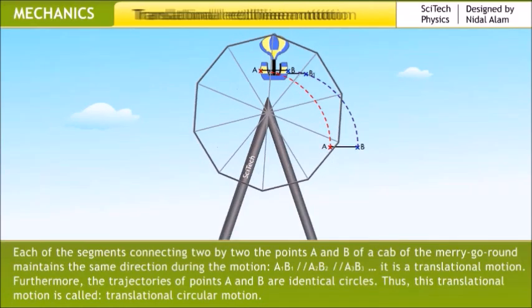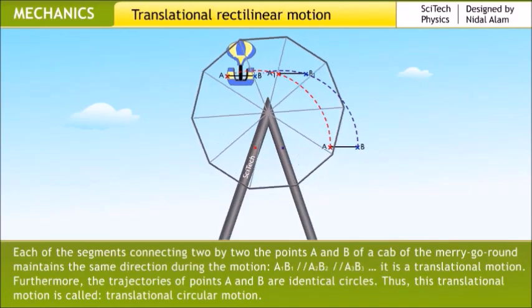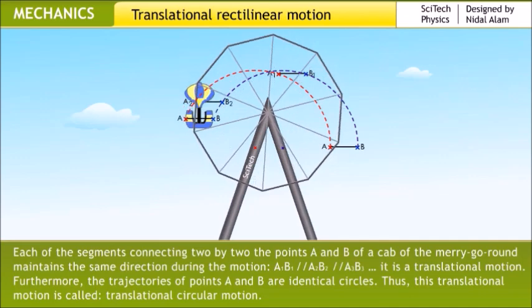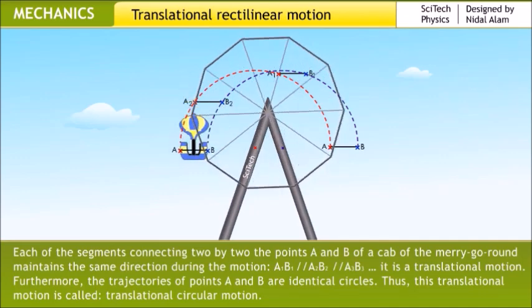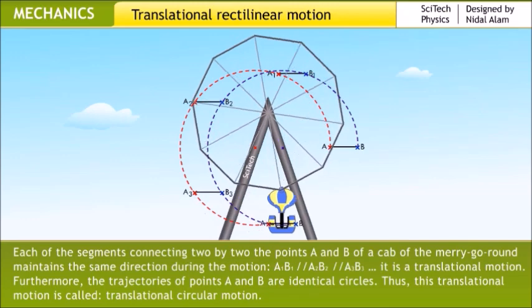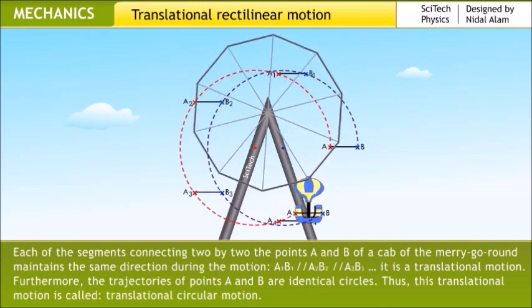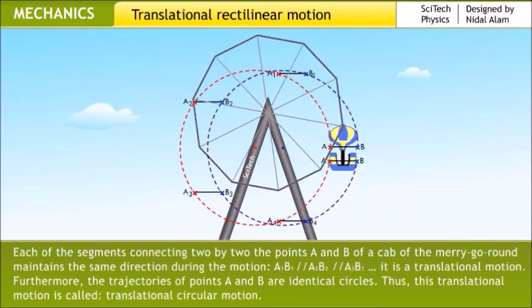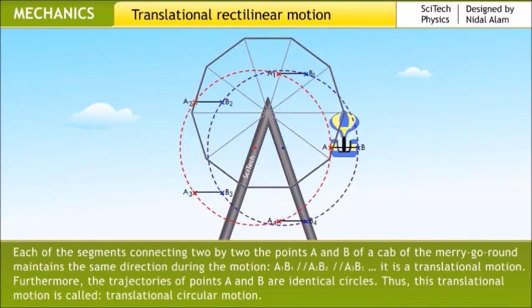Each of the segments connecting 2 by 2 the points A and B of a cab of the merry-go-round maintains the same direction during the motion. It is a translational motion. Furthermore, the trajectories of points A and B are identical circles. Thus, this translational motion is called translational circular motion.